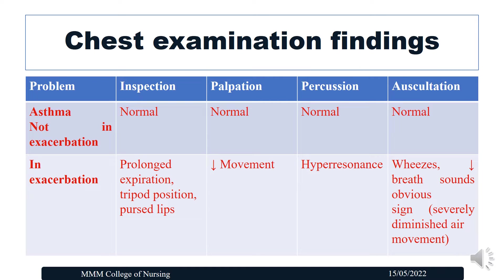The chest examination findings for asthma: if the patient is not in exacerbation, all findings on inspection, palpation, percussion, and auscultation will be normal. But if the patient is having an exacerbation of asthma, in inspection we can see prolonged expiration, tripod position, and pursed-lip breathing. In palpation there will be decreased chest movement. In percussion, hyper-resonant sound can be heard. In auscultation there will be wheeze and decreased breath sounds, which are obvious signs when there is severely diminished air movement in the chest.